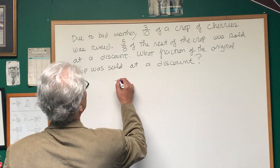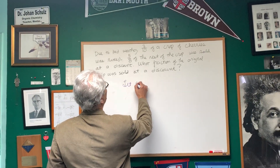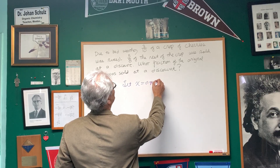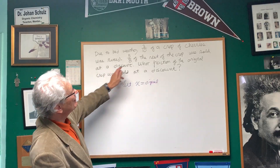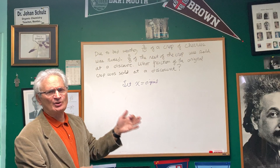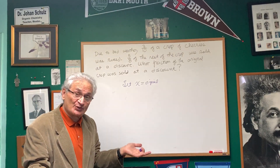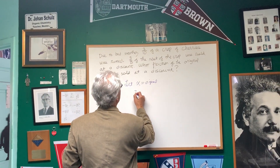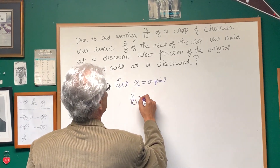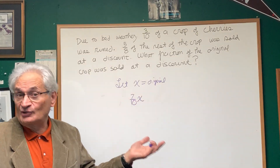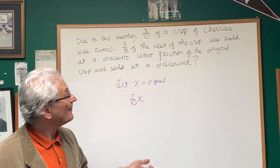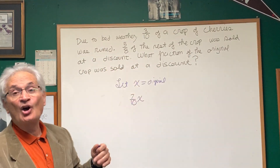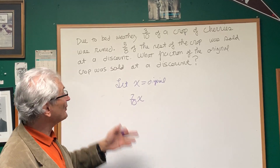So let's let X equal the original crop — the original amount of cherries that we had. Three-tenths of the crop was ruined, so if three-tenths were ruined, how much do we have left? We have seven-tenths of the original crop that are good to sell. So five-eighths of the rest of the crop was sold at a discount — what fraction was sold at a discount?